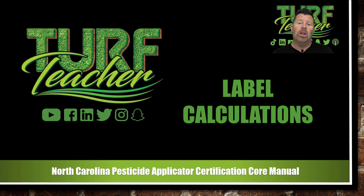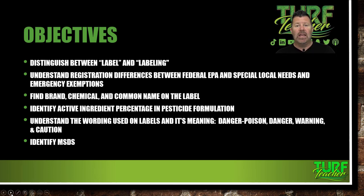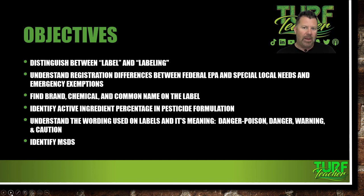So let's go ahead and get started with our course objectives. We're going to distinguish between the label and the labeling. Most of you guys already know what that is. Label is what's on the bottle. Labeling is going to be pretty much anything that the ag extension agent, a university, or a community college can give you about that pesticide itself. It's going to be pamphlets, it's going to be printed out labels.